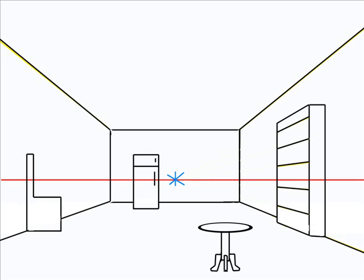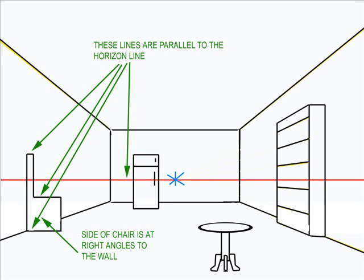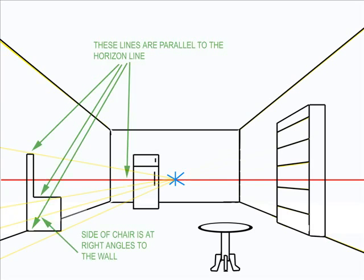Now I will draw a chair on the left-hand wall. I begin by making the side of the chair. Like the side of the bookcase, the side of the chair is at right angles to the wall, and all the horizontal lines are parallel to the horizon line. To draw the front of the chair, I line up each part with the vanishing point.